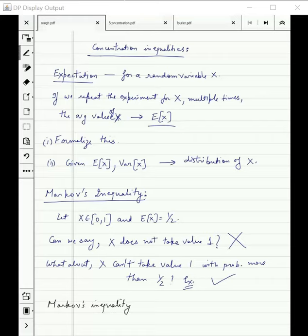So Markov's inequality says if X is positive, that means it only takes positive values, and we are given some a greater than 0, then probability that X is bigger than a is bounded by expected value of X divided by a.